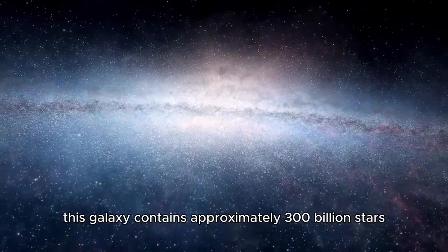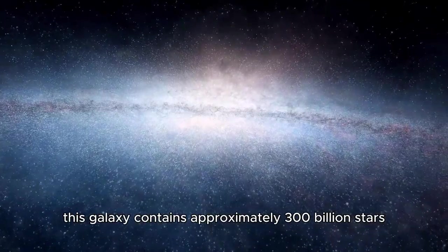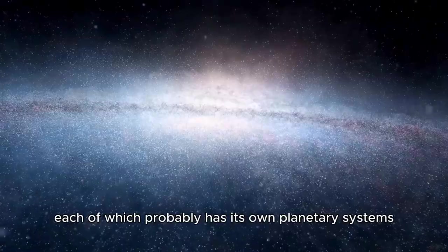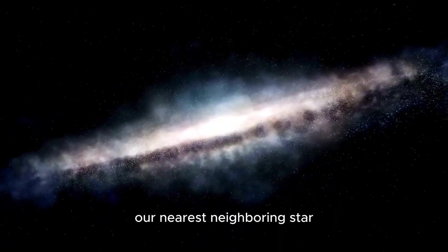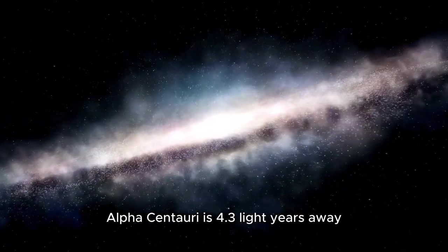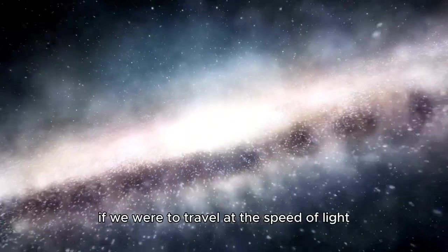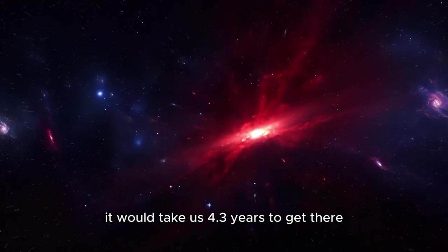This galaxy contains approximately 300 billion stars, each of which probably has its own planetary systems. Our nearest neighboring star, Alpha Centauri, is 4.3 light years away, which means that if we were to travel at the speed of light, it would take us 4.3 years to get there.